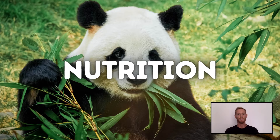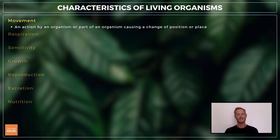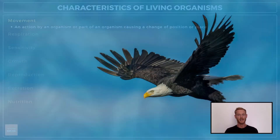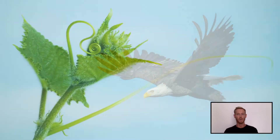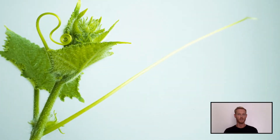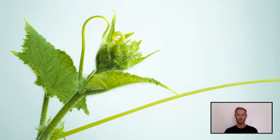Each of these will be covered in more detail in later chapters, but for topic 1.1, only a very basic level of understanding is required. Movement is an action by an organism or part of an organism causing a change of position or place. Most animals are capable of changing location entirely, while plants move in response to external stimuli like sunlight and temperature.